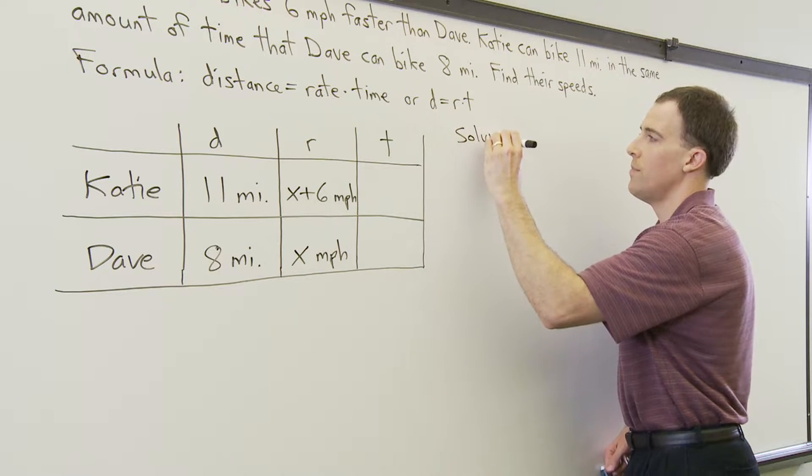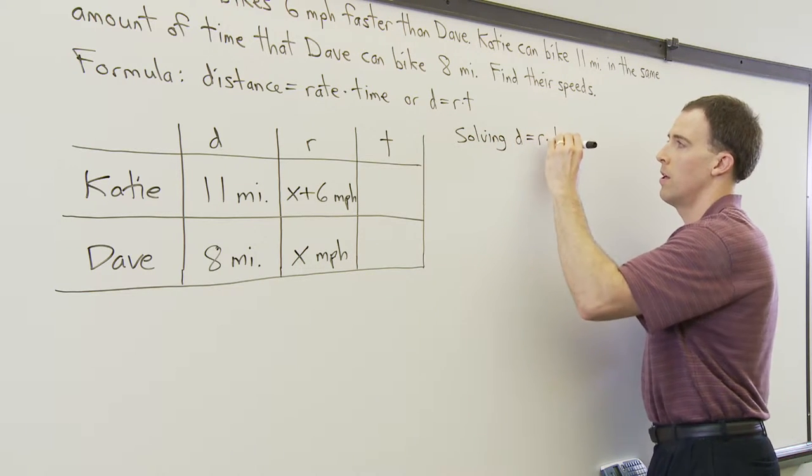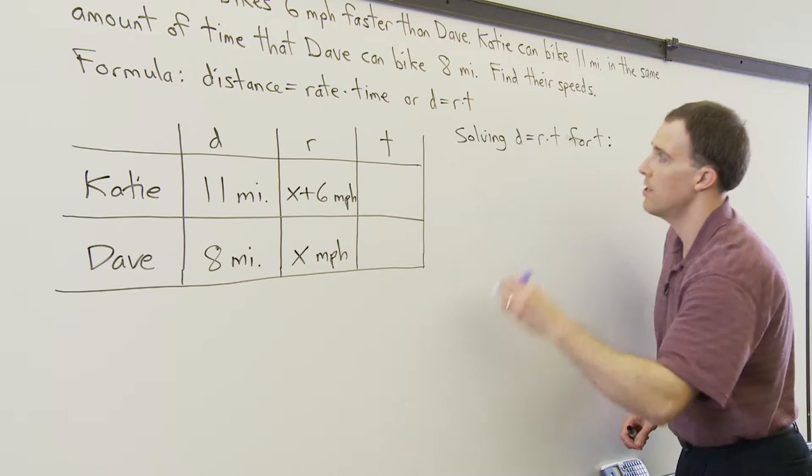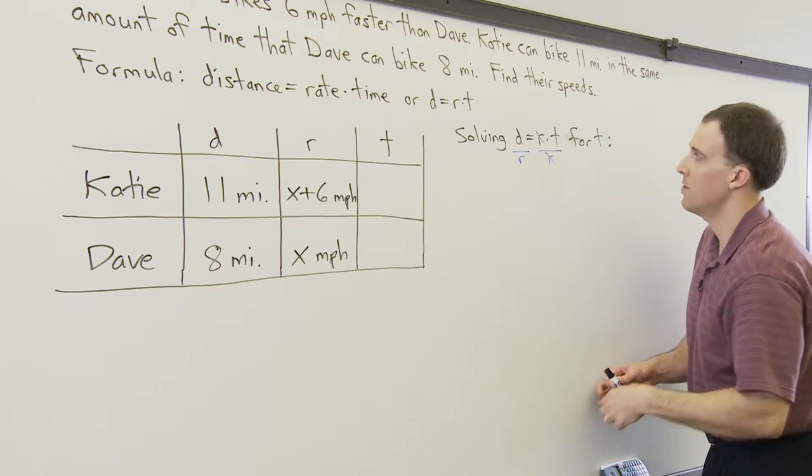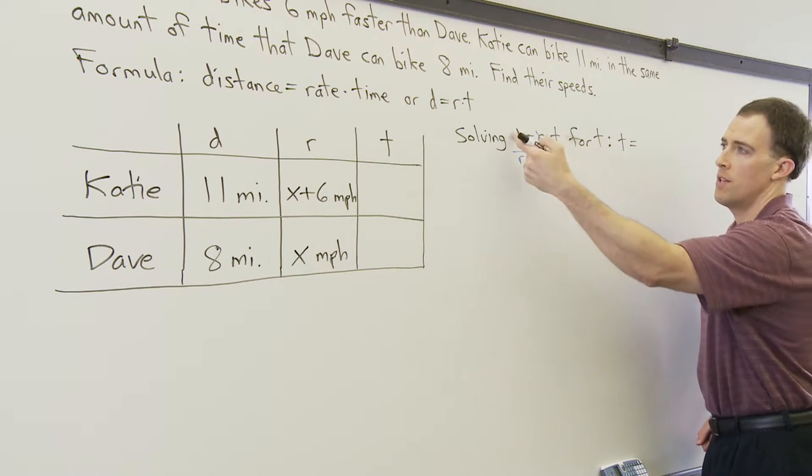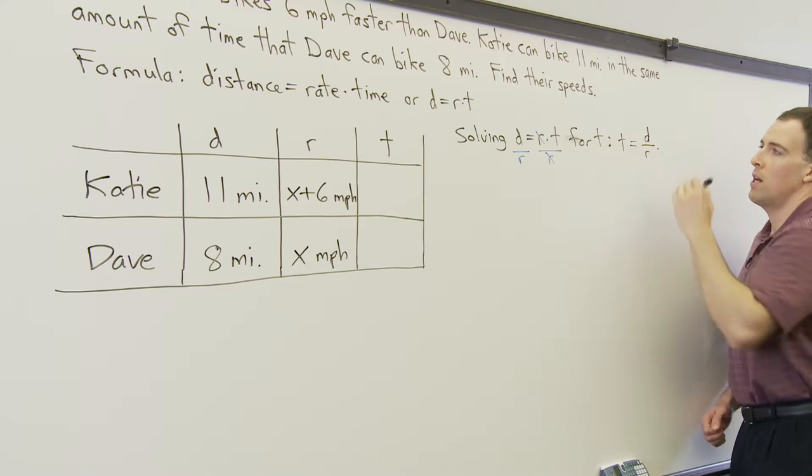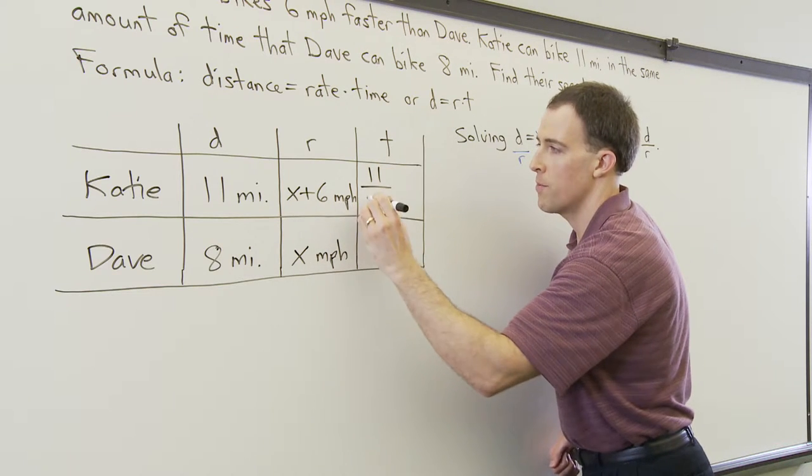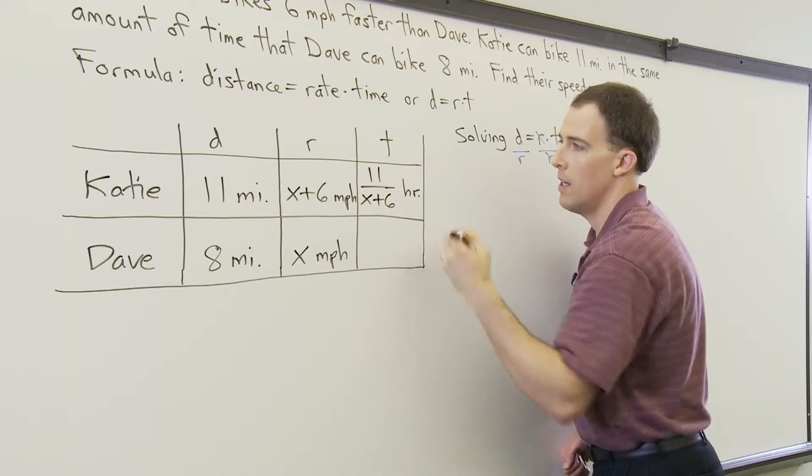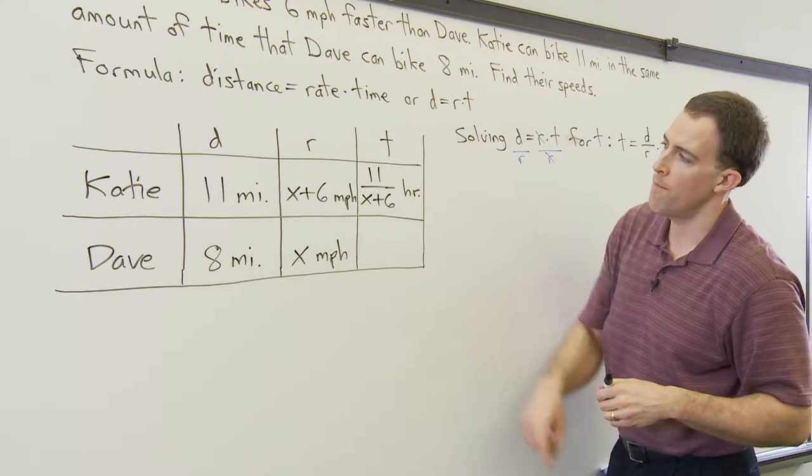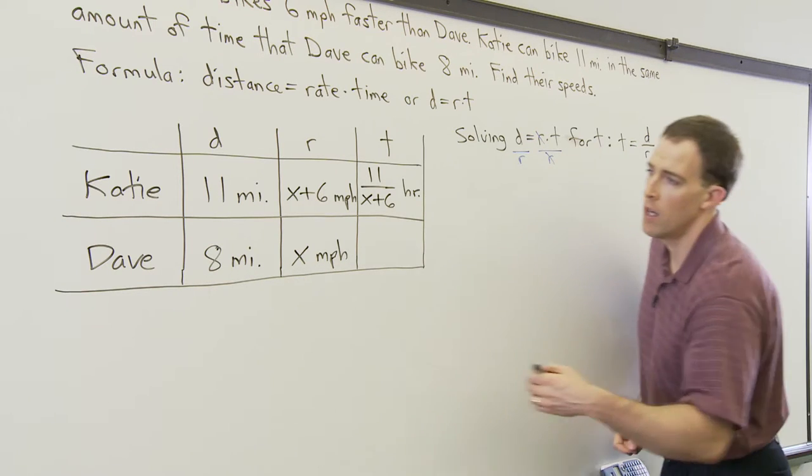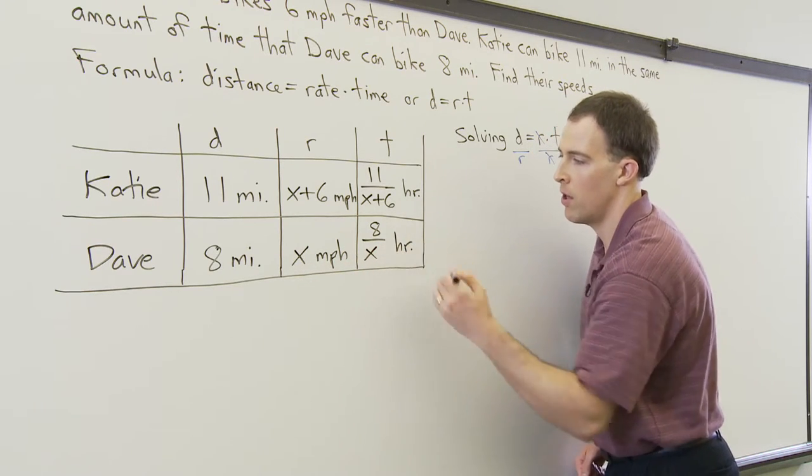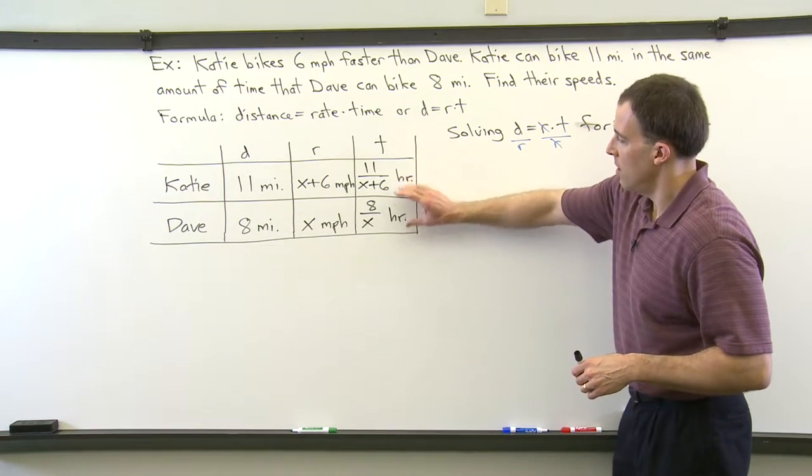So solving distance equals rate times time for time, we can just divide both sides by R. The R's cancel on the right hand side and it's going to be time is equal to the distance divided by the rate. So each person's time can be expressed as the person's distance divided by their rate. Katie's time then would be 11 miles divided by X plus 6 miles per hour, or 11 over X plus 6, and that would be hours. And then Dave's time similarly would be his distance divided by his rate. So his time is going to be 8 miles divided by X miles per hour.